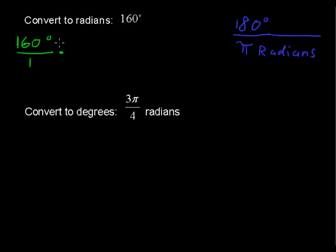And now what do we want to cancel? We want to cancel the degrees, so we're going to put the degrees in the denominator. 180 degrees. We're always going to be multiplying by either this fraction or the reciprocal of this fraction.